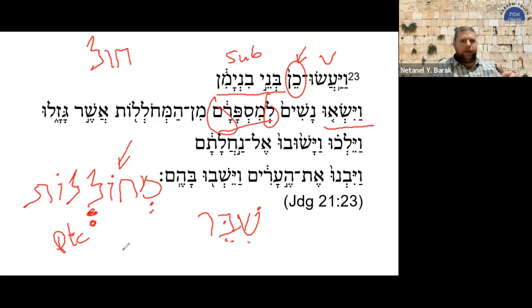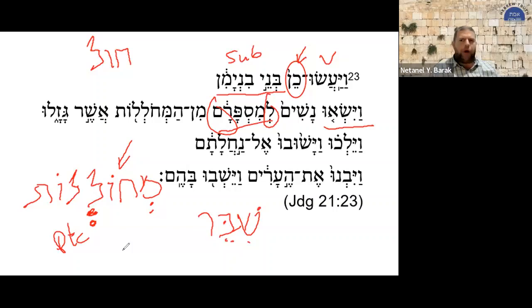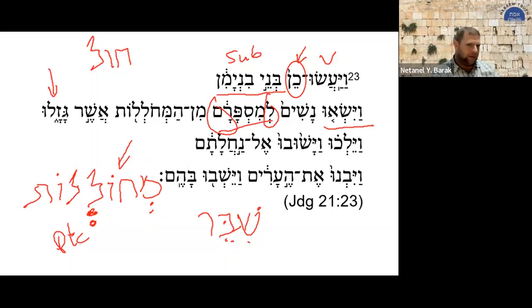It has to do with dancing, maybe even shaking, trembling, writhing. 'From those who are dancing' — feminine. 'Those women who were dancing, whom they gazalu, whom they have stolen.' Note that in Hebrew there is no distinction between verbs describing the stealing of property and the stealing of people.